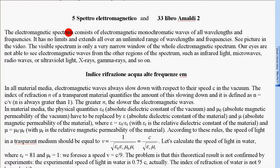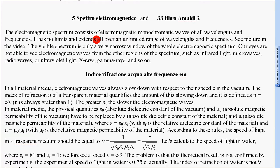The electromagnetic spectrum consists of electromagnetic monochromatic waves of all wavelengths and frequencies. It has no limits and extends over an unlimited range of wavelengths and frequencies.